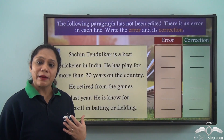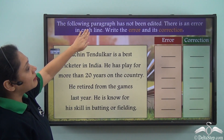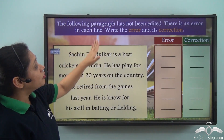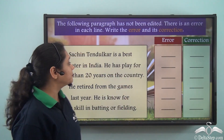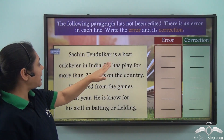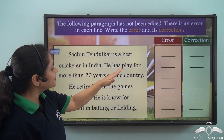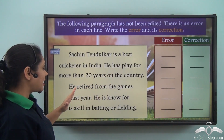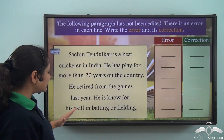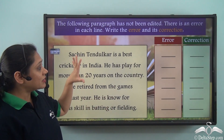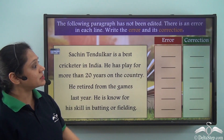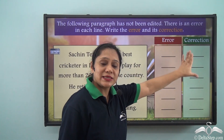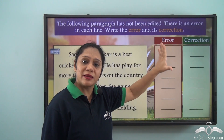Let us look at a sample paragraph. The following paragraph has not been edited. There is an error in each line — write the error and its correction. Sachin Tendulkar is a best cricketer in India. He has played for more than 20 years on the country. He retired from the games last year. He is no for his skill in batting or fielding. We have two columns: one for the error and one for the correction.